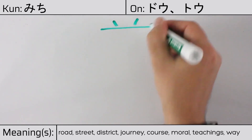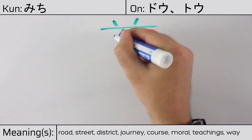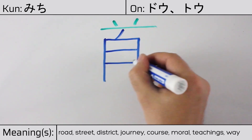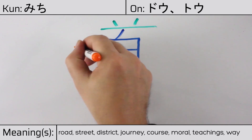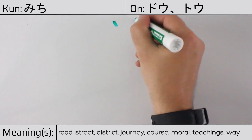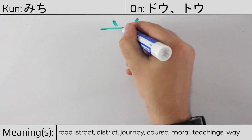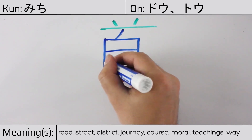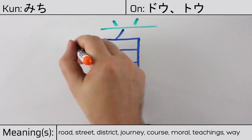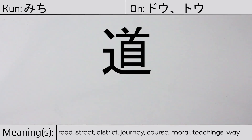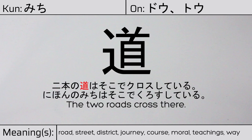This character is made up of the following radicals or parts: two dots at the top, kanji ichi, ji meaning own, and finally the radical meaning walk, road, or to advance. You can remember this kanji by the following hint: following the leader is the way to master each respective art. Our example sentence is: 日本の道はそこでクロスしている — The two roads cross there.